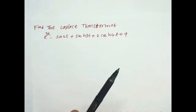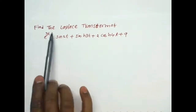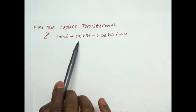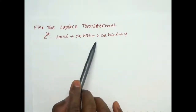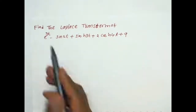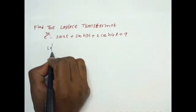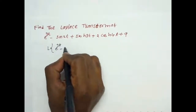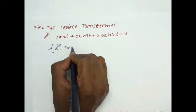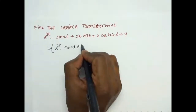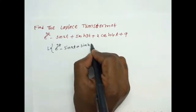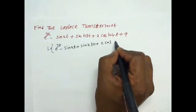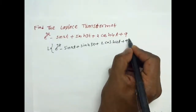Hi friends, here is one Laplace transform example. Find the Laplace transform of e^(3t) minus sin(2t) plus sinh(3t) plus 2cosh(4t) plus 9. That means L of e^(3t) minus sin(2t) plus sinh(3t) plus 2cosh(4t) plus 9.